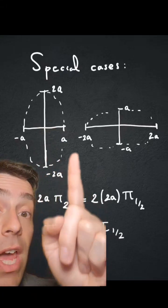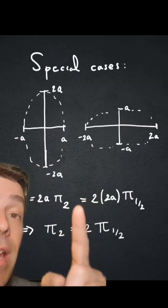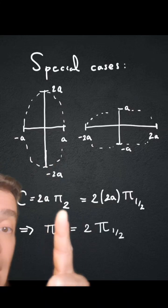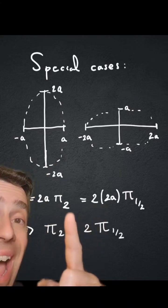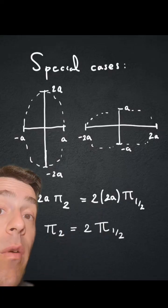And that gives you a relationship between pi sub 2 and pi sub a half. So pi sub 2 is twice pi of a half.